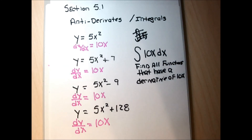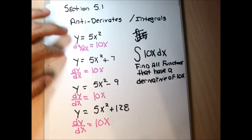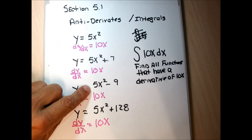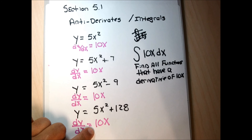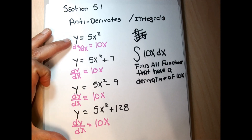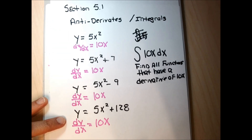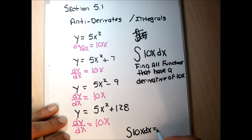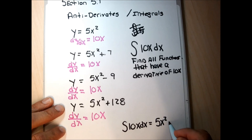There are four of them right there: 5x squared has a derivative of 10x, 5x squared plus 7 has a derivative of 10x, 5x squared minus 9 has a derivative of 10x, and 5x squared plus 128 has a derivative of 10x. To show a generic way to express all these functions, we write the answer in a general form. Any function written as 5x squared plus some constant C will have a derivative of 10x.